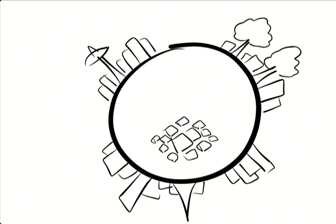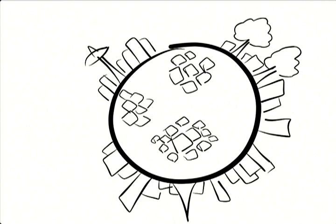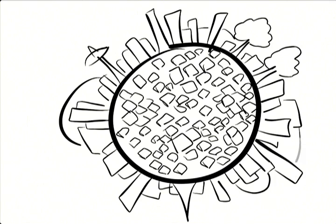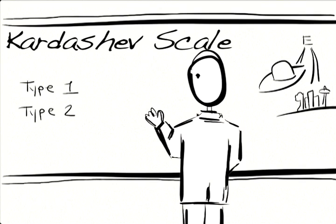The more energy they consume, the greater their level of technological advancement. The Kardashev Scale provides us with a rough means of measuring just how advanced they are: Type 1, Type 2, or Type 3.